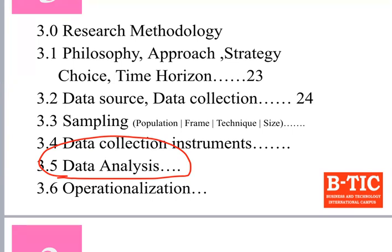In your proposal, write: 'This research will use SPSS version 21 and will conduct chi-square test, correlation analysis, t-test, ANOVA, and descriptive analysis.' Don't use first-person language — always say 'this research.' Remember, SPSS is solely for quantitative analysis. If you do qualitative research, you can analyze manually or use specialized software.